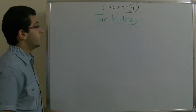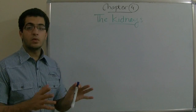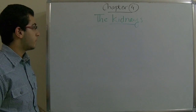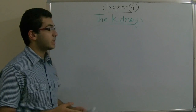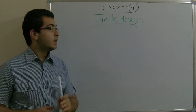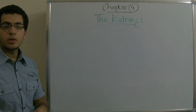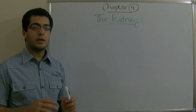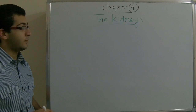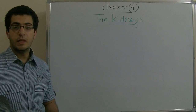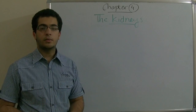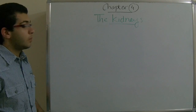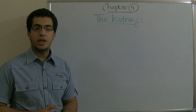The kidneys are two organs found in all vertebrates. In the lower vertebrates the kidneys are thin, elongated organs stretched on both sides of the vertebral column. While in the higher vertebrates, such as humans, the kidneys are more firm and rounded in shape.